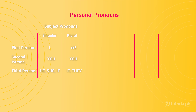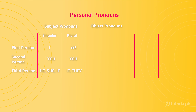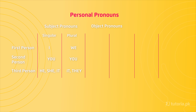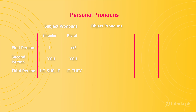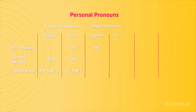Moving on to object pronouns. First person: if you have to use an object pronoun — object means there is an action that you have done — and your object is singular, then you will use 'me'. And if you have to use plural, then you will use 'us'.